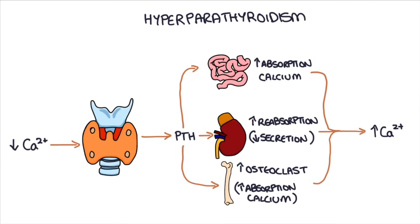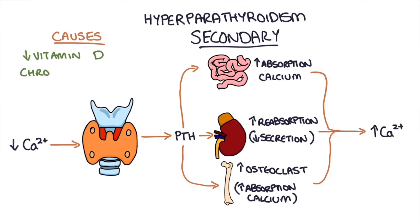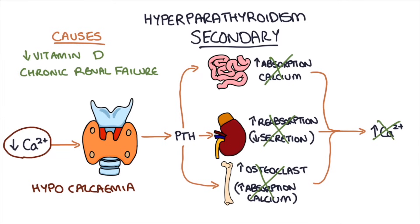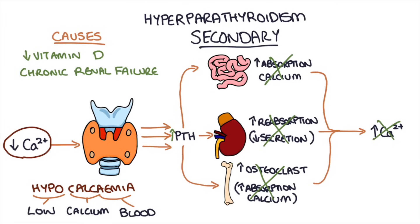The next cause of an abnormally high parathyroid hormone is called secondary hyperparathyroidism. This is where either insufficient vitamin D or chronic renal failure leads to reduced absorption of calcium from the intestines, kidneys, and bones. This leads to hypocalcemia, or a low level of calcium in the blood. The parathyroid glands react to this low level of calcium by secreting more parathyroid hormone to try and compensate. Over time, the total number of cells in the parathyroid gland increases as they respond to the increased need to produce parathyroid hormone.